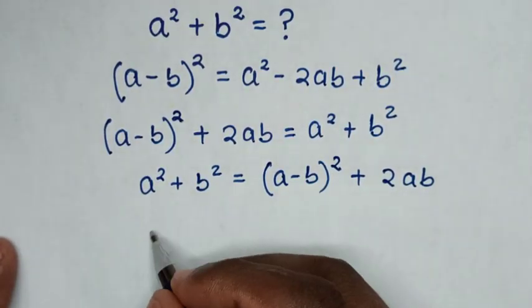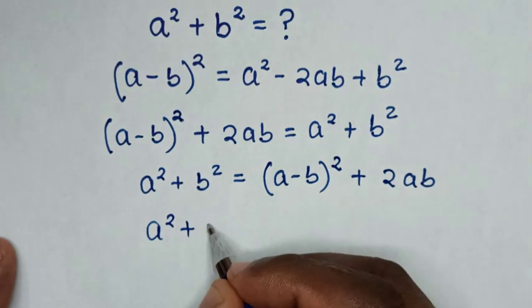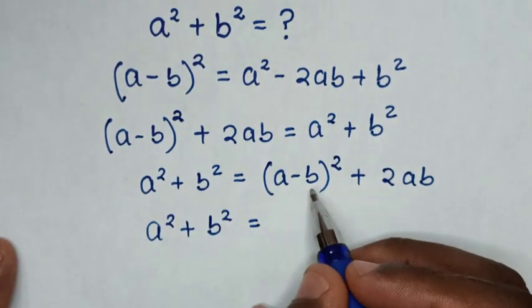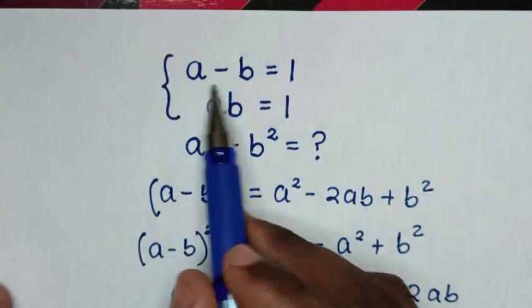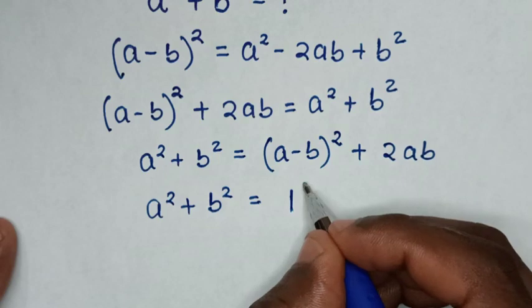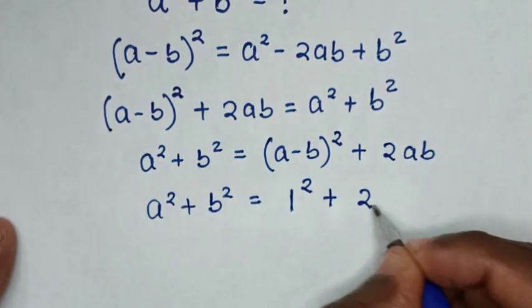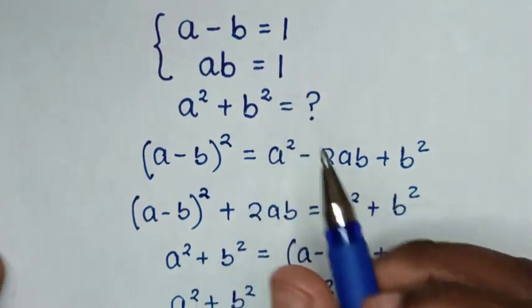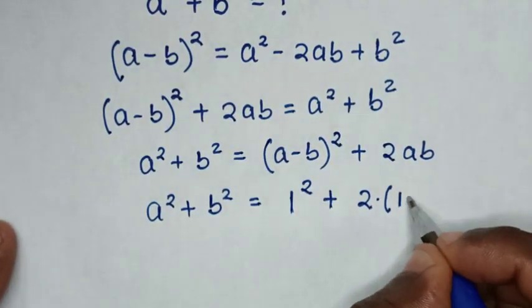Then in the next step, it will be A square plus B square is equal to, from here A minus B, we substitute the value of A minus B is 1, so it will be 1 square, then plus 2 times, we substitute the value of AB which is 1, so bracket 1.